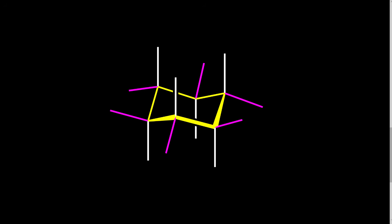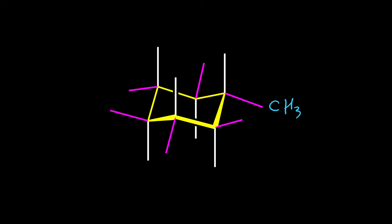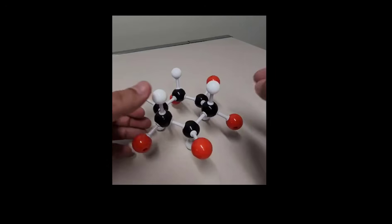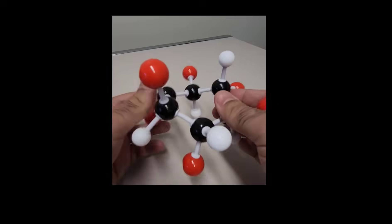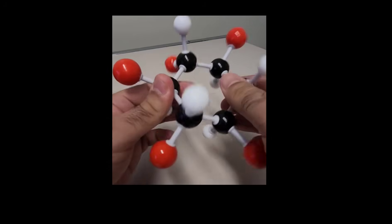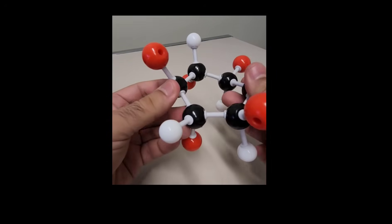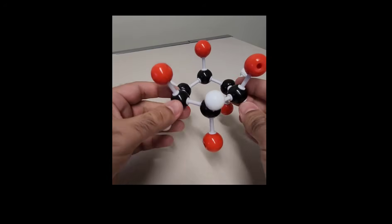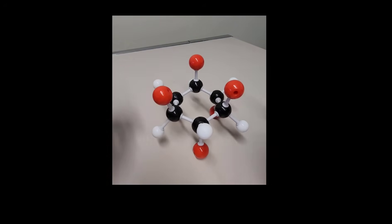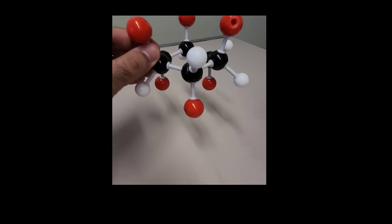If we have a group on axial position, like a methyl group, or if we have a group on equatorial position, these two positions are not identical and their energies are different. However, by rotation of a series of bonds, the positions of axial and equatorial bonds are changing — the red atoms go to axial position and the white atoms go to equatorial position. This process is called ring flip, and the axial and equatorial positions exchange.